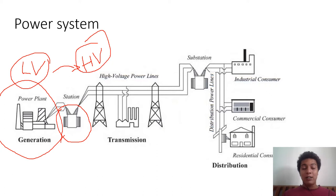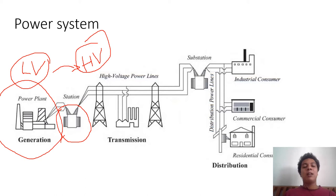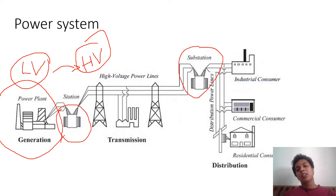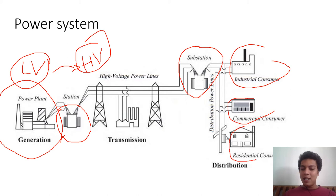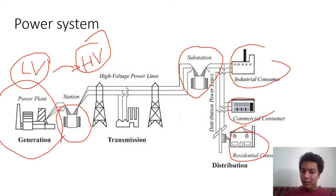After generation at low voltage, we convert it to high voltage — in India up to 765 kV, which is the highest functional voltage level. Using transmission lines we send it over long distances. For example, it might come from a nuclear power station in Tamil Nadu all the way to Kerala. In Kerala it gets converted into smaller voltage levels using another transformer and is then distributed to different consumers: industrial consumers, commercial consumers, and residential consumers like us at home, who receive power at around 230 volts.